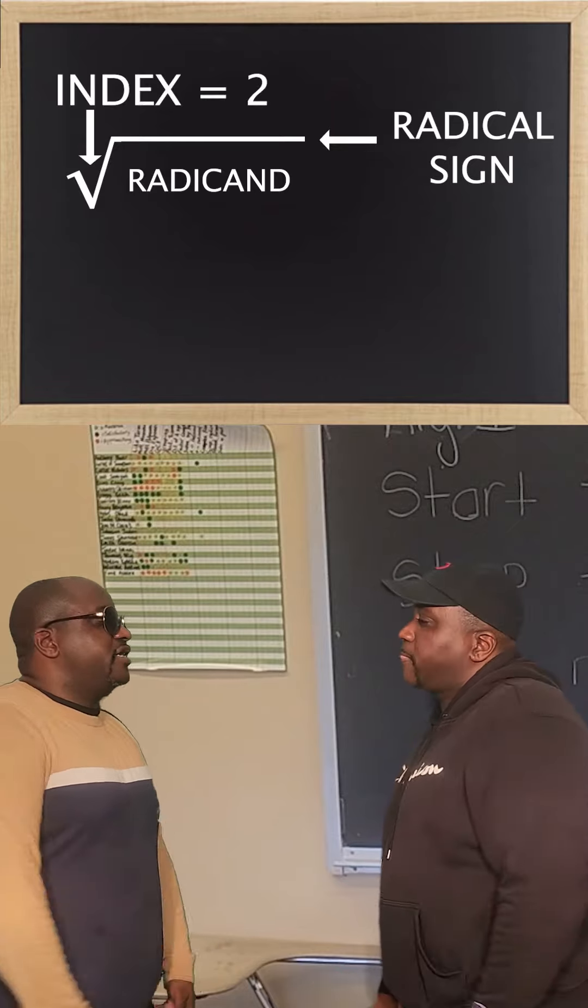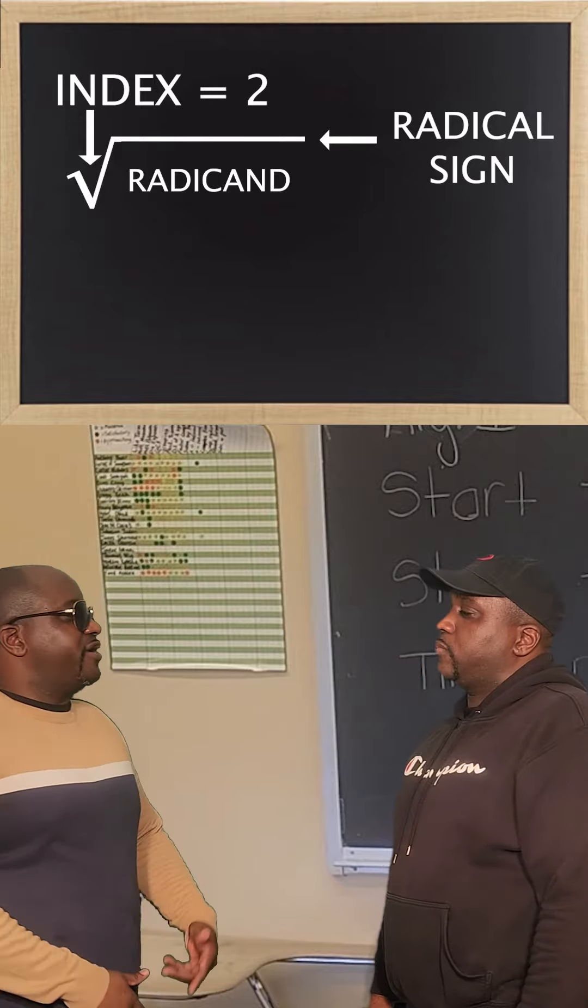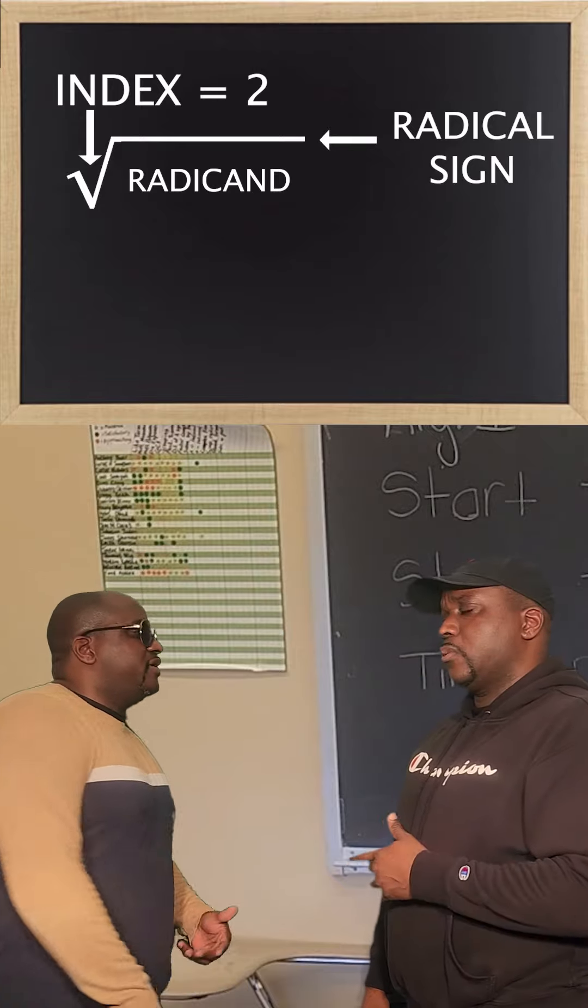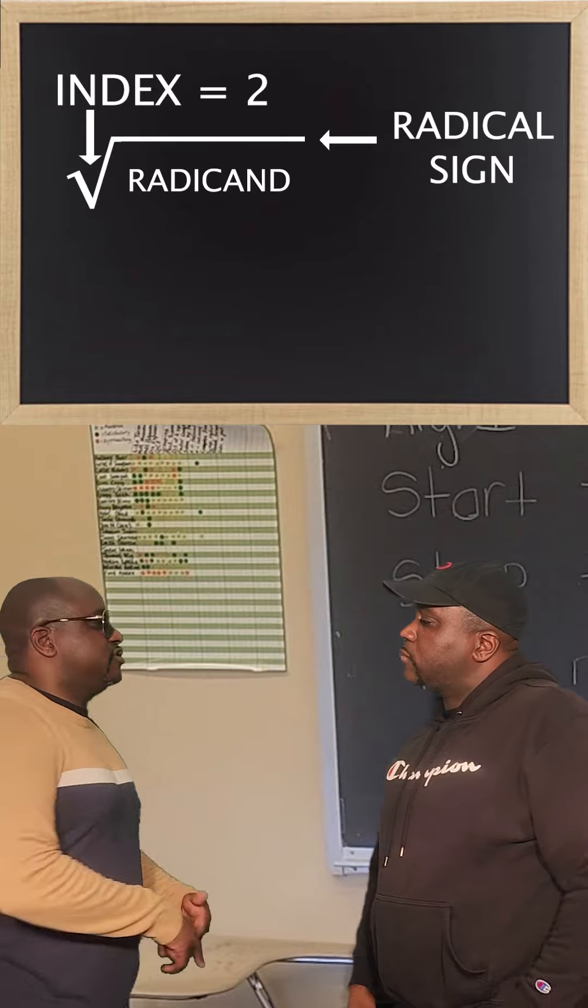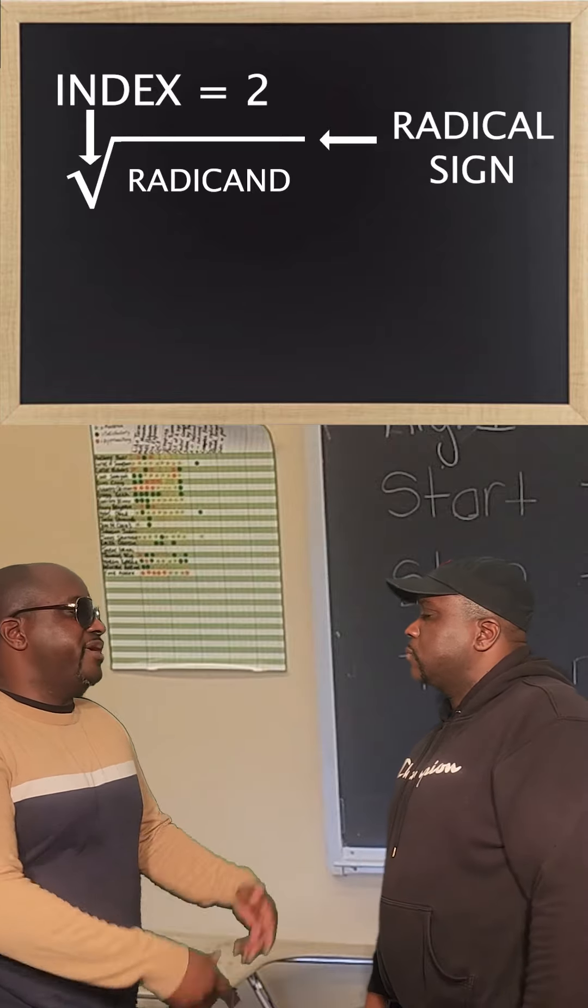When you don't see a number, then the index is two. Like two dimensions, why they call it square root. It's called an index, which leads me to the sentence which translates the same in the language that I meant.